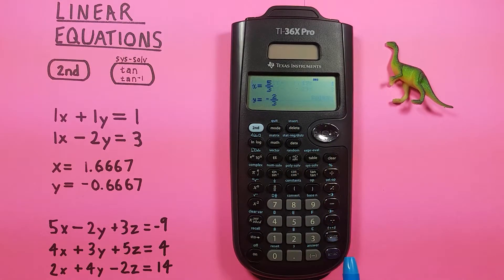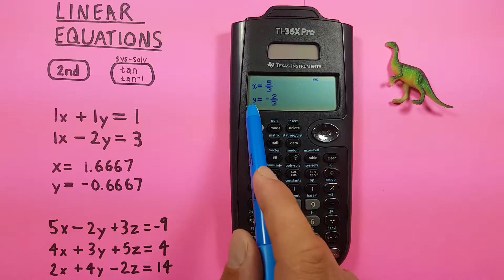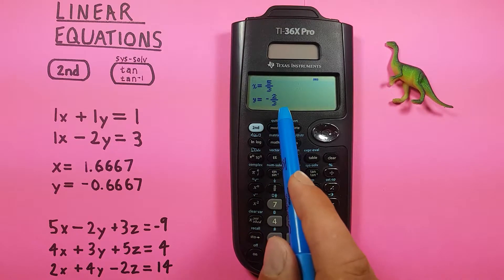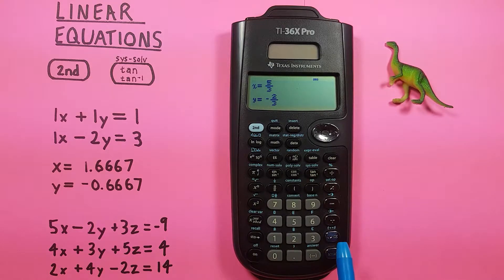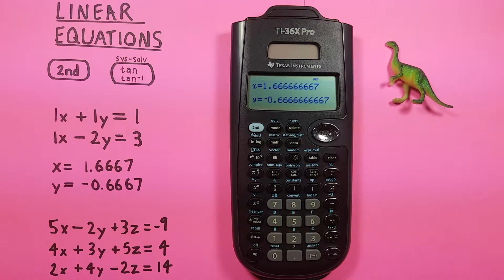So we press solve. And it solves X is equal to 5 over 3, and Y is equal to negative 2 over 3. Now these are in fractions and if we want these in decimals, all we have to do is press this key here, this left and right arrow key. And you can see they're converted to 1.6666.